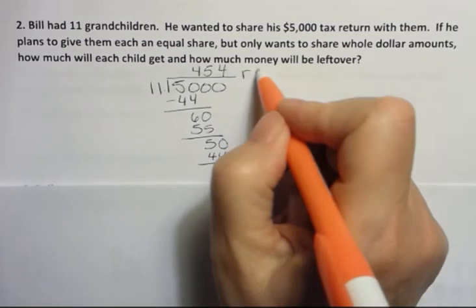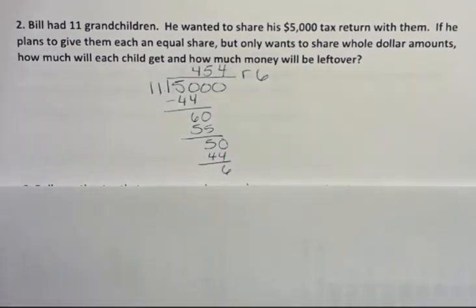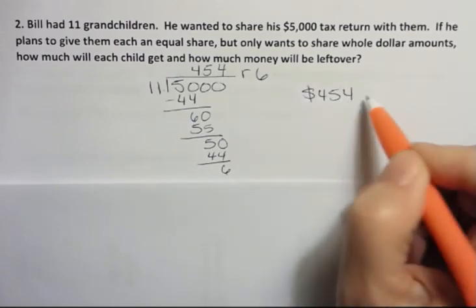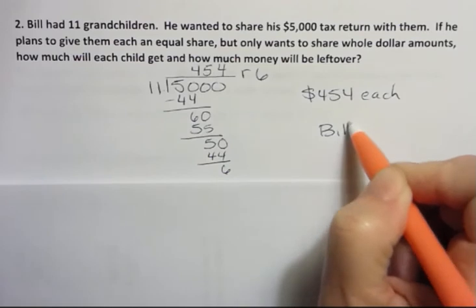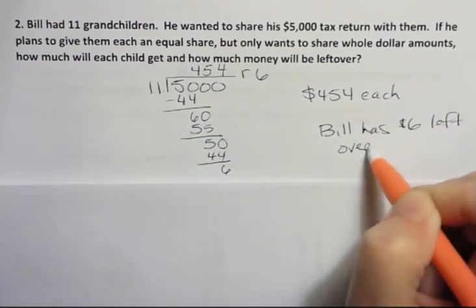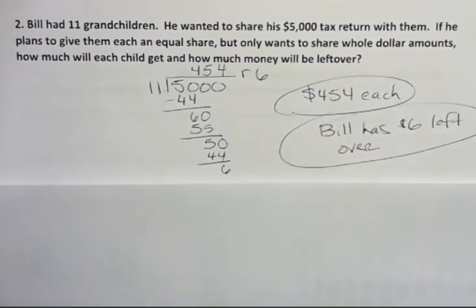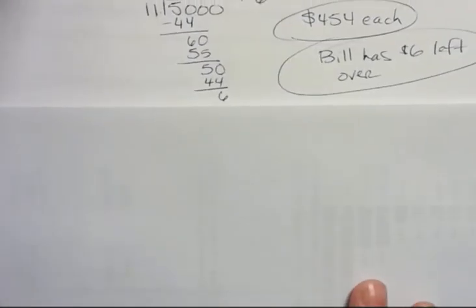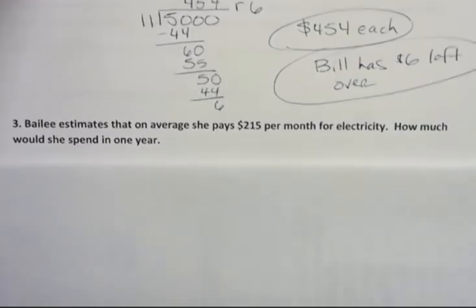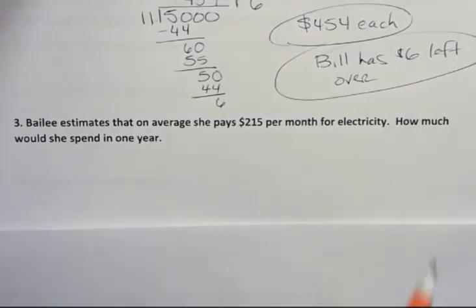And that gives me 6. Now that's my remainder because I can't put 11 in there again. I'm not going out to the cents because it says he only wants to give them whole dollar amounts. So what this tells me is that everybody's going to get $454 and Bill is going to have $6 left over. We can check that by doing 454 times 11 — we would get 5,000 after we added the six.